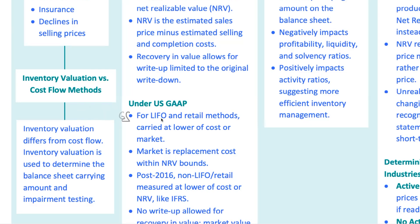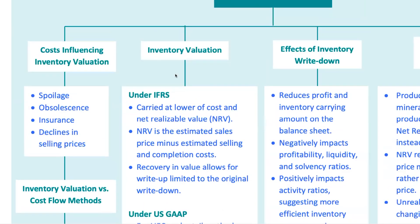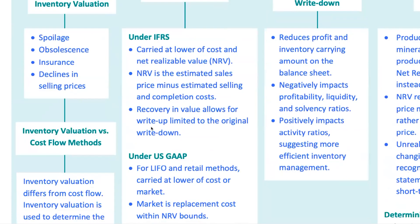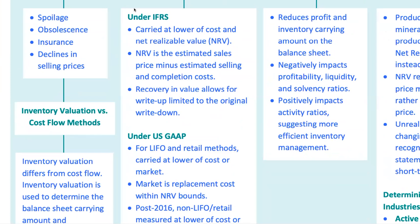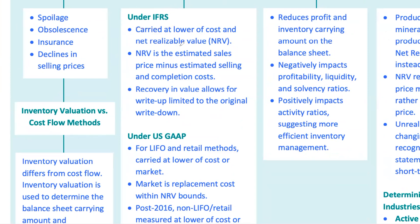Now let's dive into how inventory is valued under two major accounting standards: IFRS, International Financial Reporting Standards, and US GAAP, Generally Accepted Accounting Principles. This is where things get really interesting because the rules differ between these two frameworks, and that can lead to some important differences in financial reporting. Under IFRS, companies are required to value inventory at the lower of cost or net realizable value, NRV.